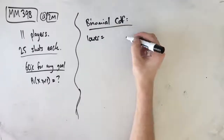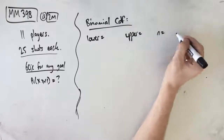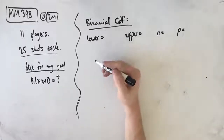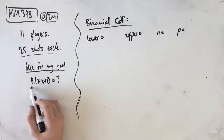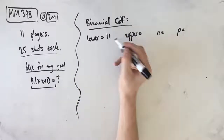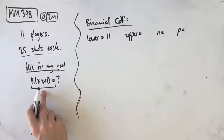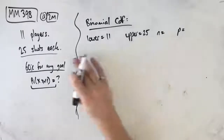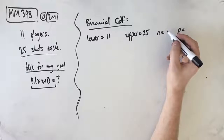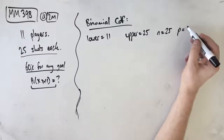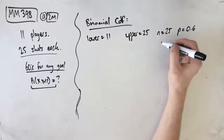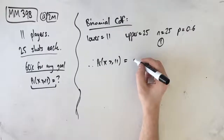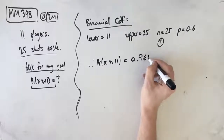The binomial CDF asks us for four things: lower bound, upper bound, N, and P. Our lower bound is the lowest number of successful shots in our range — we're looking for P(X ≥ 11), so the lower bound is 11. Our upper bound is not specified, which means it's 25, the implied upper bound, since he only takes 25 shots. N is 25 — the number of shots — and P is 0.6, the probability of success. The calculator gives us P(X ≥ 11) = 0.9656. That's our answer for part A.